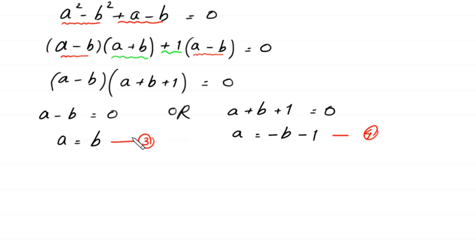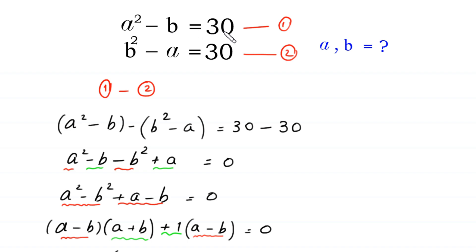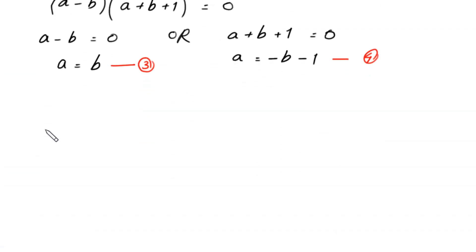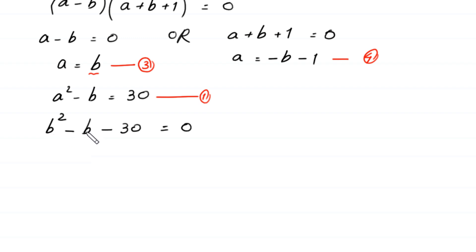First we solve using equation 3. We put the value a equals b into equation 1: a squared minus b equals 30. Substituting gives b squared minus b minus 30 equals 0. This is a quadratic equation in terms of b and is factorable.